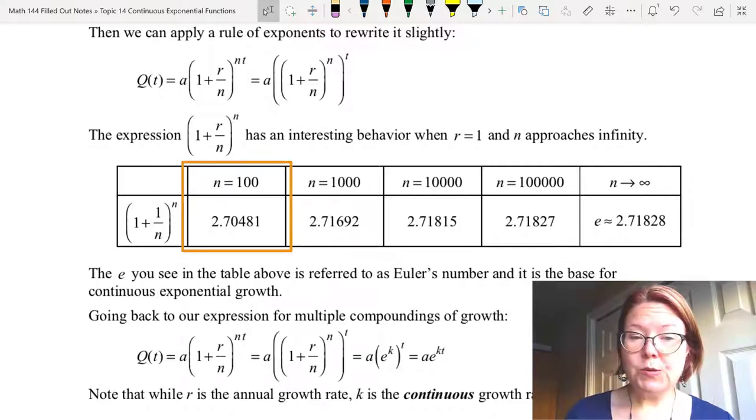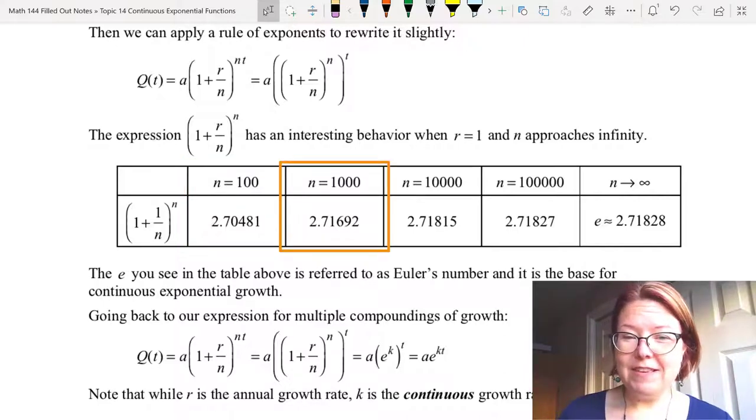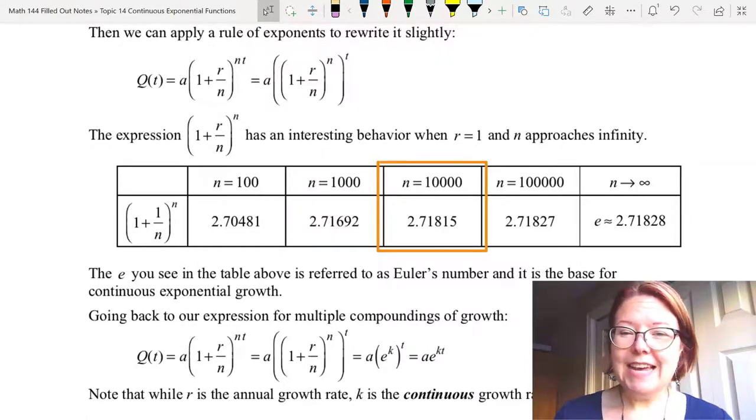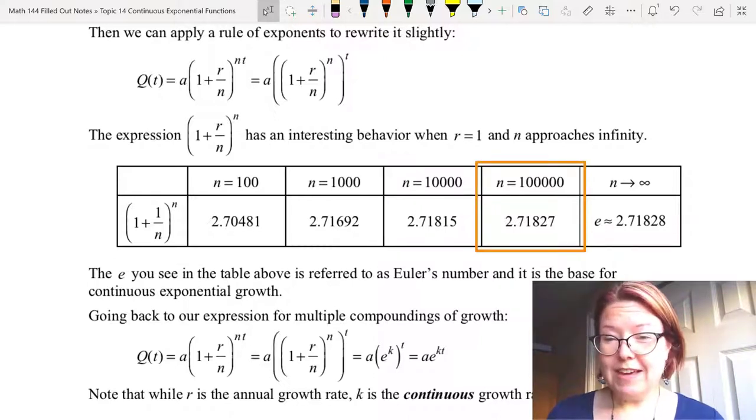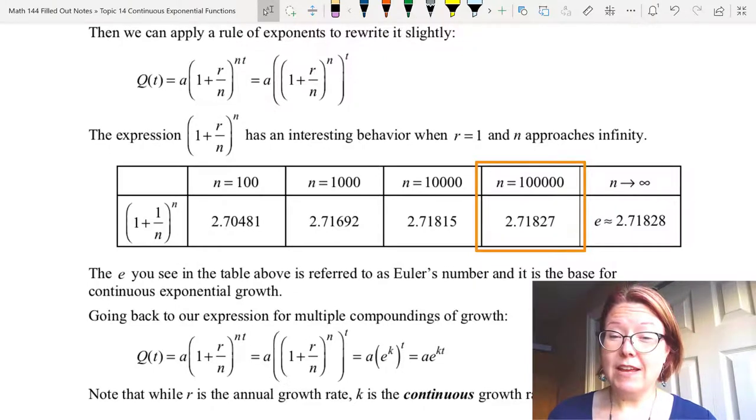When n is 100, the result is 2.70481. When n is 1000, the result is 2.71692. When n is 10,000, the result is 2.71815. And when n is 100,000, the result is 2.71827.